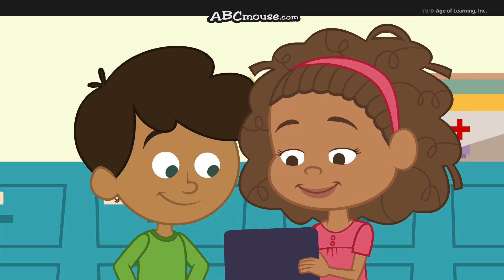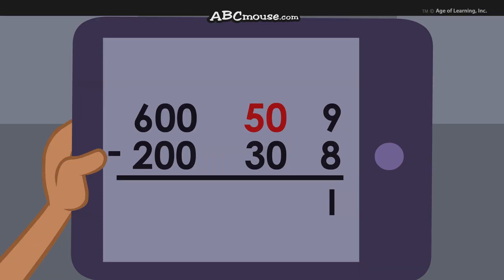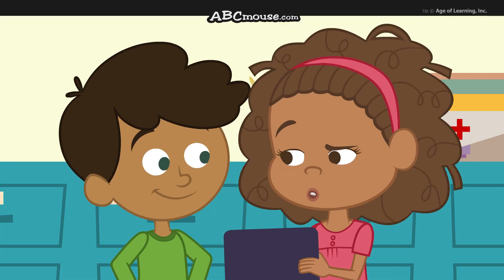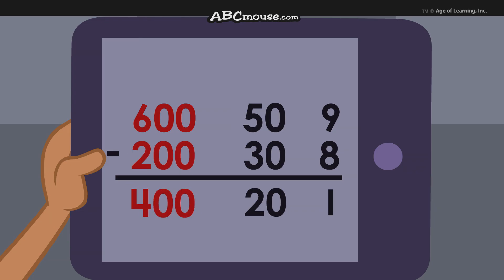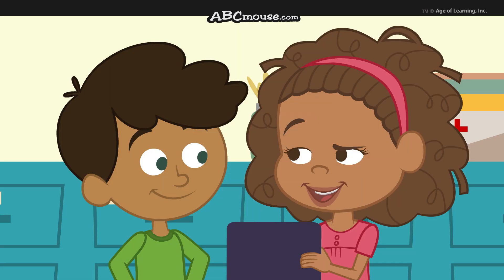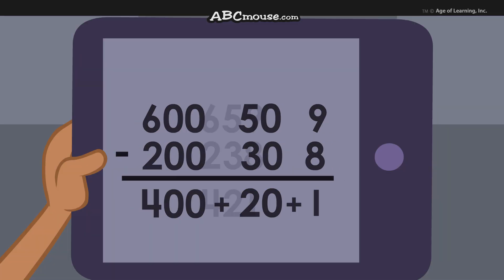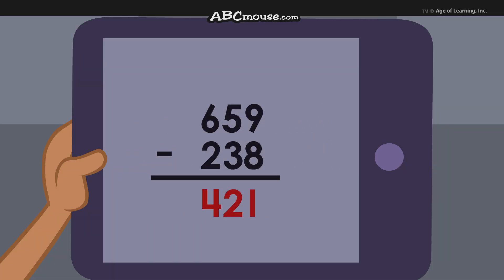Now the tens place: 5 tens minus 3 tens is 2 tens — that's 20. And 6 hundreds minus 2 hundreds is 4 hundreds. Put it all together and we have 400 plus 20 plus 1, which is the same as 421.